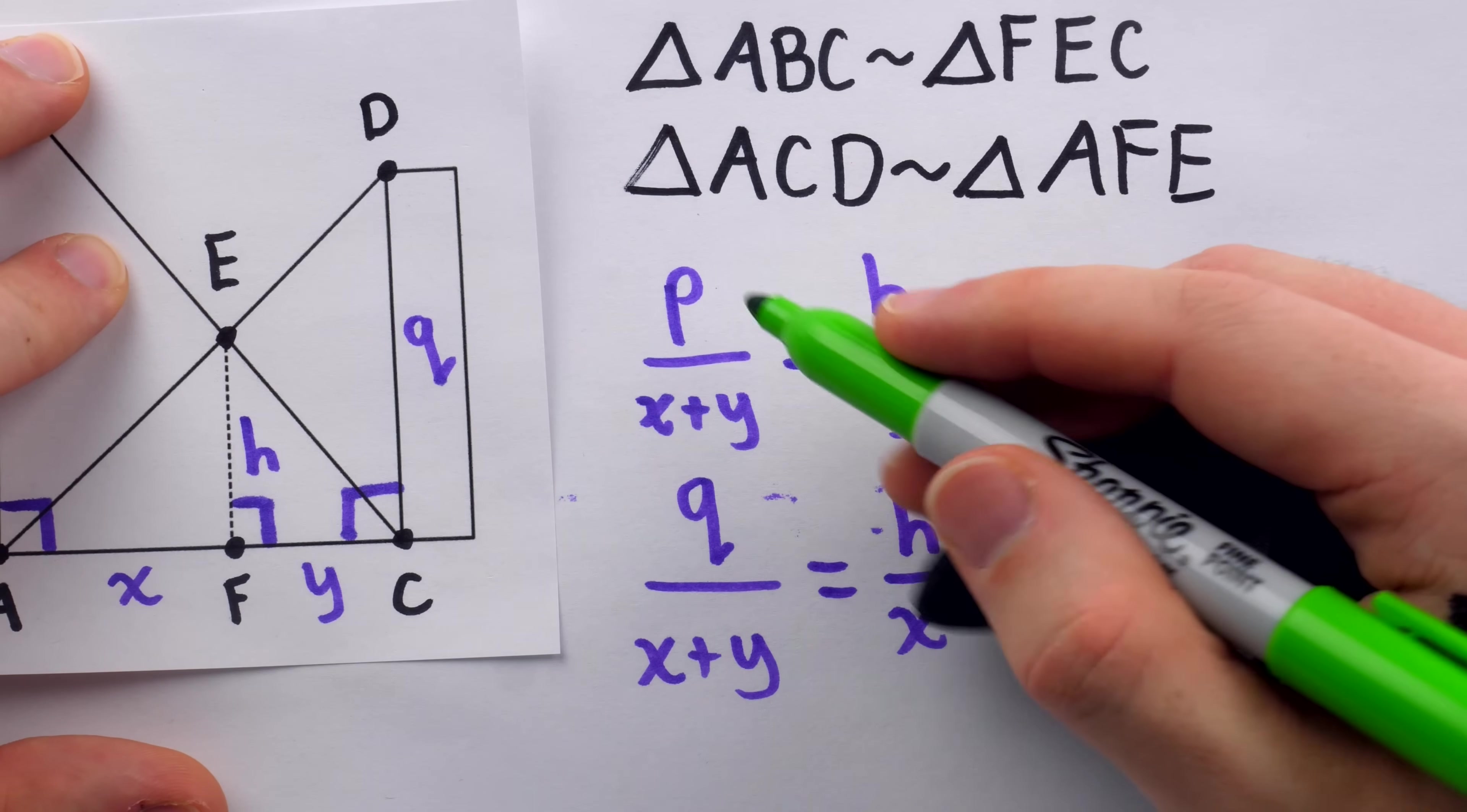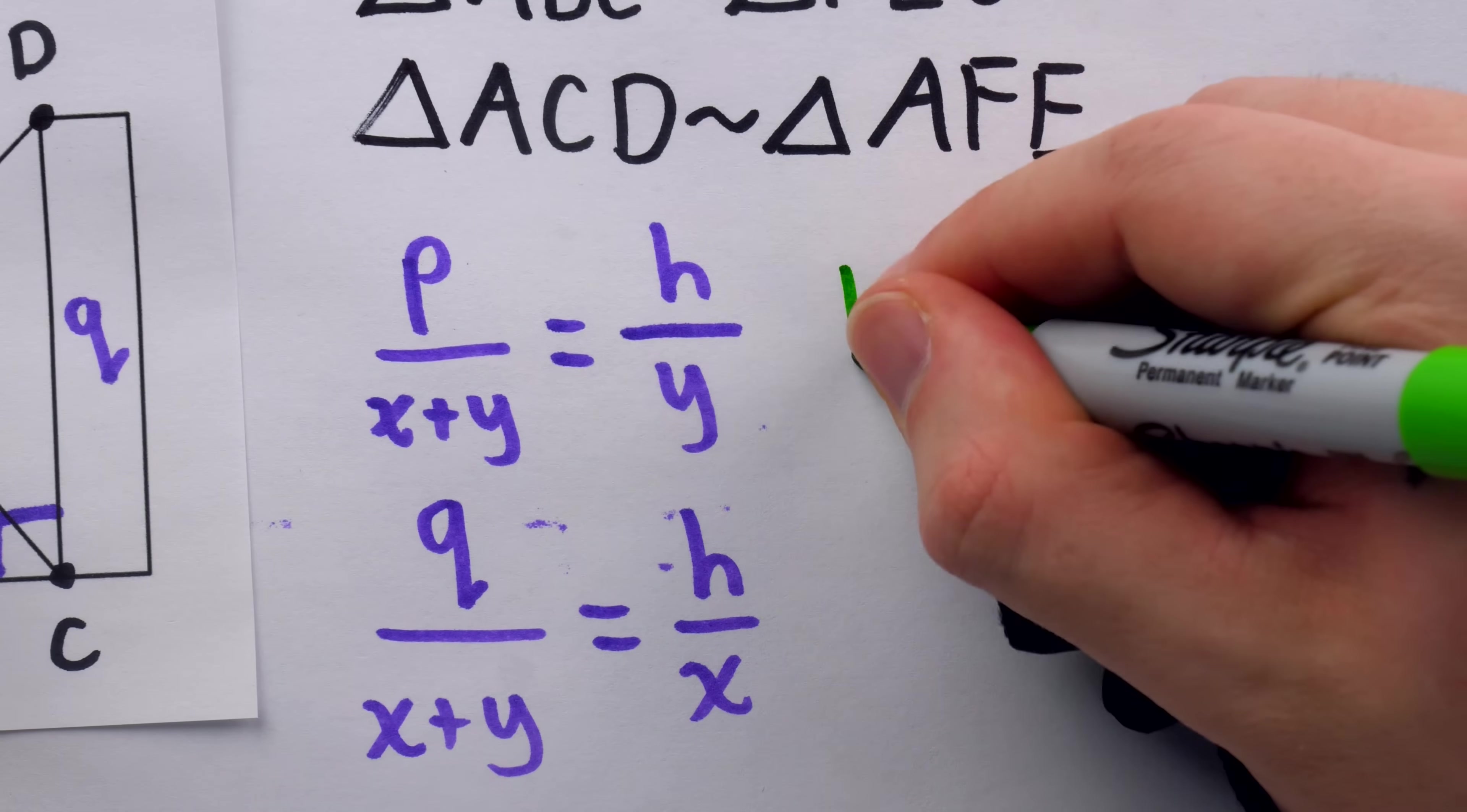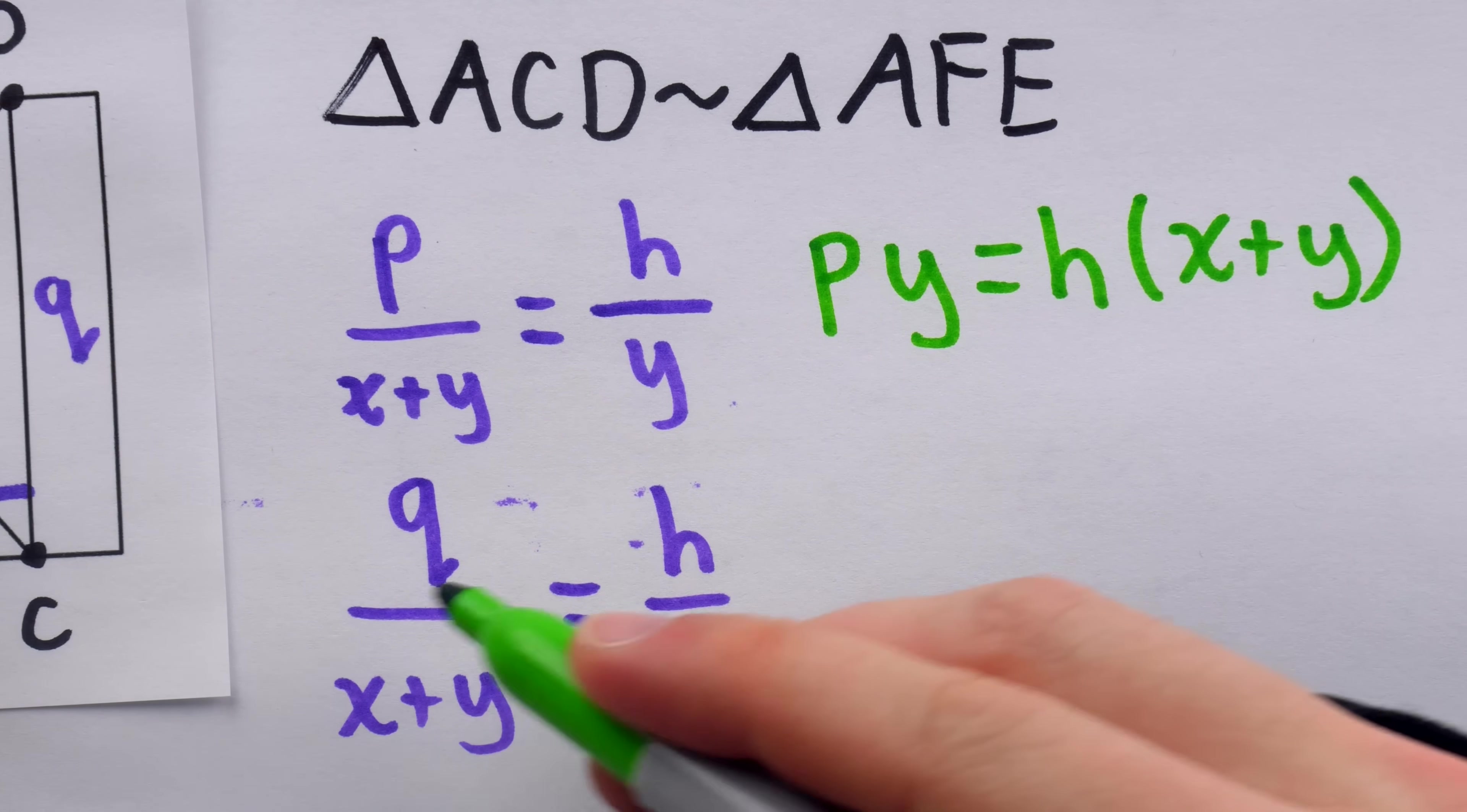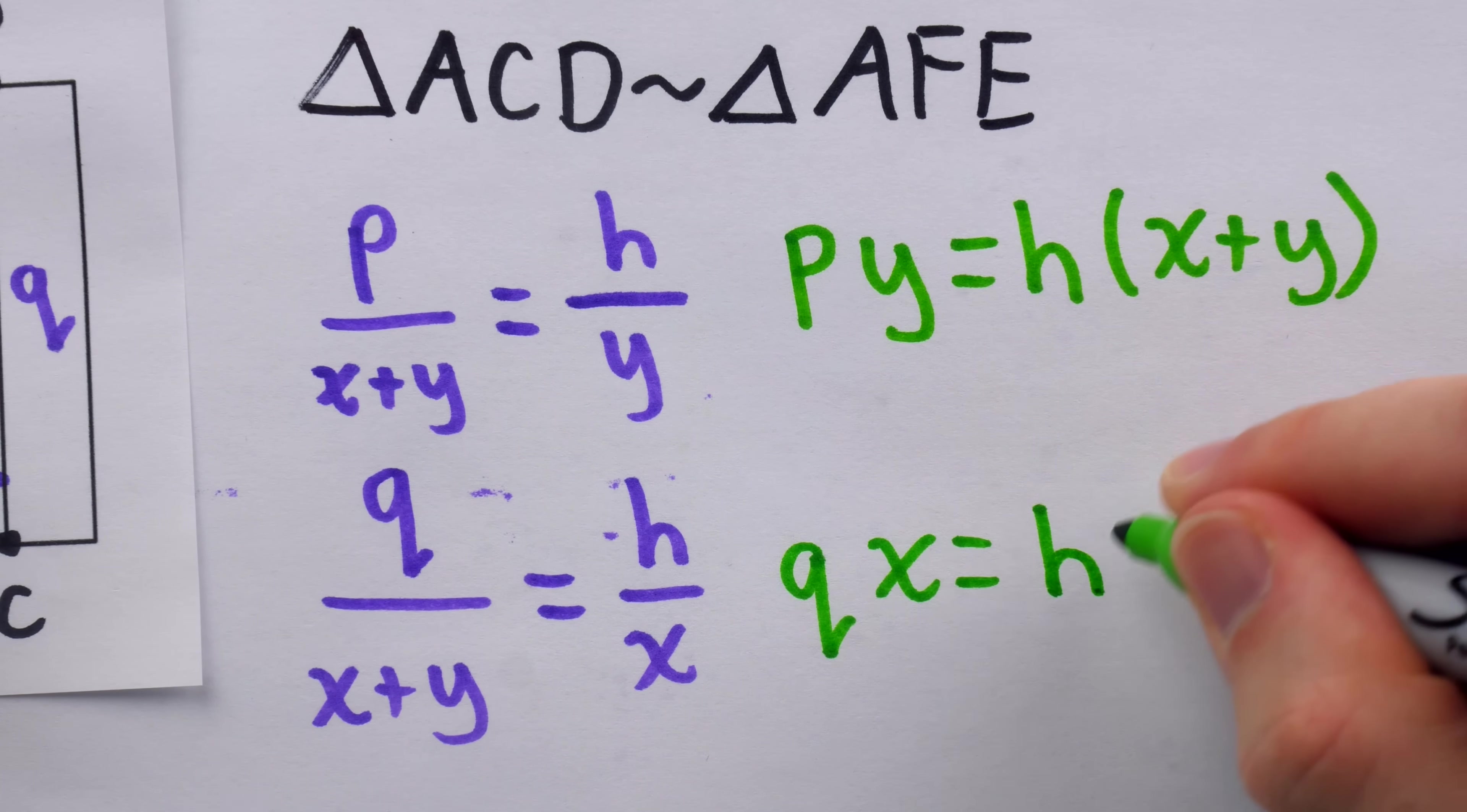We're going to begin by what I think the kids call cross-multiplying in both of these equations. So I'm multiplying both sides by Y and by X plus Y in this equation. That's going to give us PY equals H times X plus Y. And we'll do a similar thing with the other equation, multiplying both sides by X plus Y, and multiplying both sides by X. We're just getting rid of these denominators. So that's going to give us QX equals H times X plus Y.